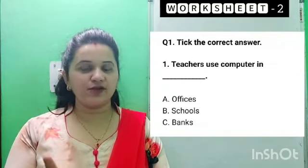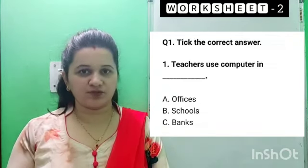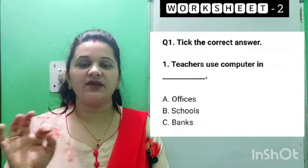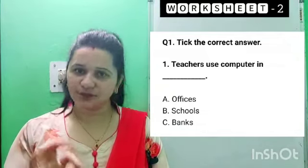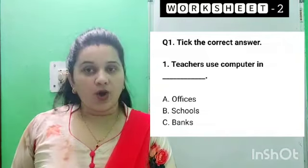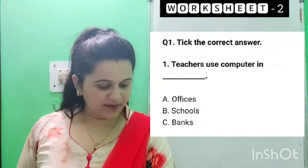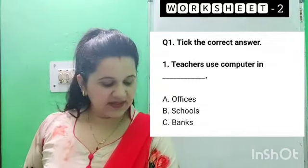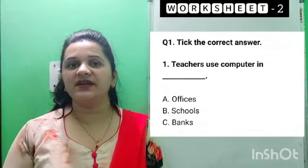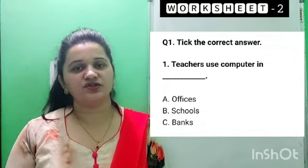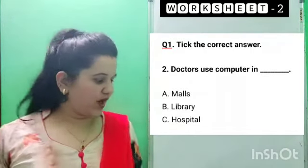Now children, I am telling you again — you are not supposed to note down all three options. You just simply write down the correct answer. The options are: A. Offices, B. Schools, C. Bank. Whatever is the answer, just write it down directly under the question. Now the second one: doctors use computers in blank.